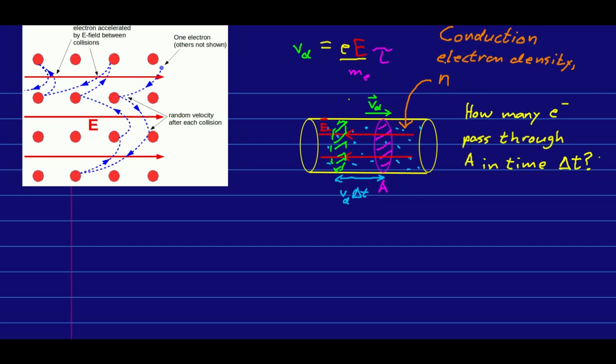And now, that means that all of the electrons in this volume here, vd delta t long, with this cross-section of a, that volume contains all of the electrons that will pass through this area a in the time delta t. And so, we can now write the number of electrons passing through must just be the conduction electron density times the volume here.